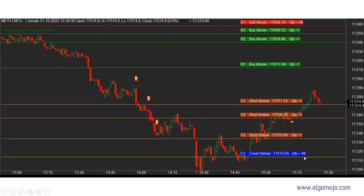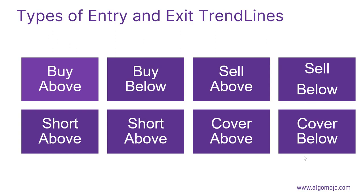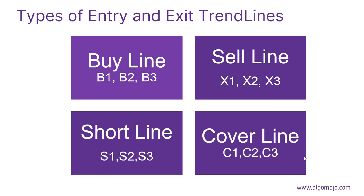There are also modes you need to know about: you can configure whether you want to buy above the line or buy below the line, sell above or sell below, short above or short below, and cover above or cover below. Once the configuration is done, trades will execute automatically. The study lines accept up to two characters — so B1, B2, B3 for buy entries; X1, X2, X3 for sell lines; S1, S2, S3 for short lines; and C1, C2, C3 for cover lines.